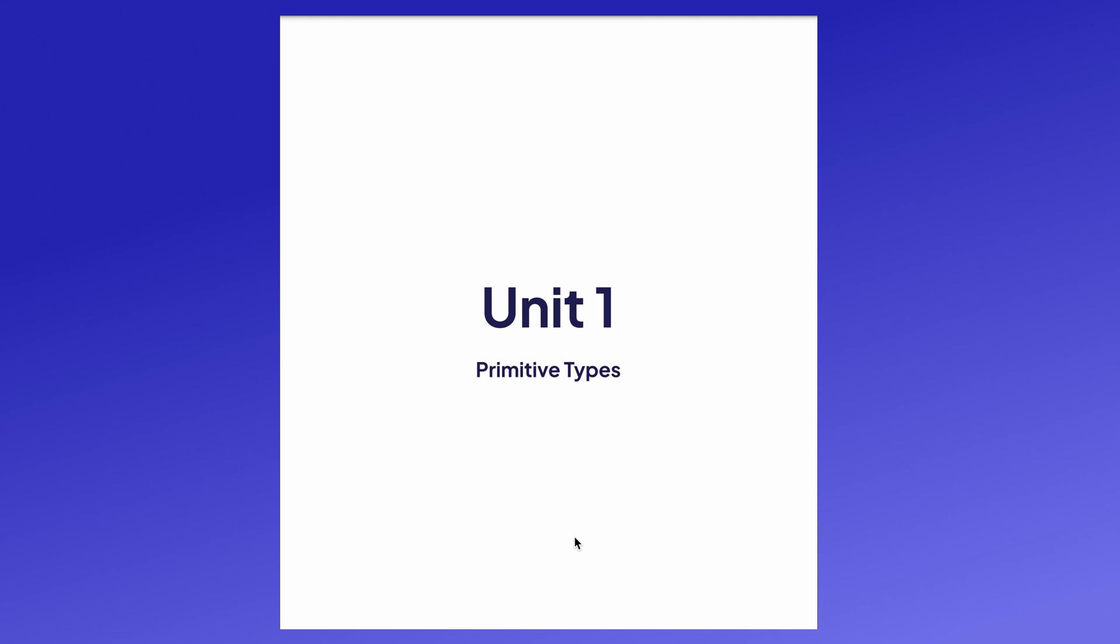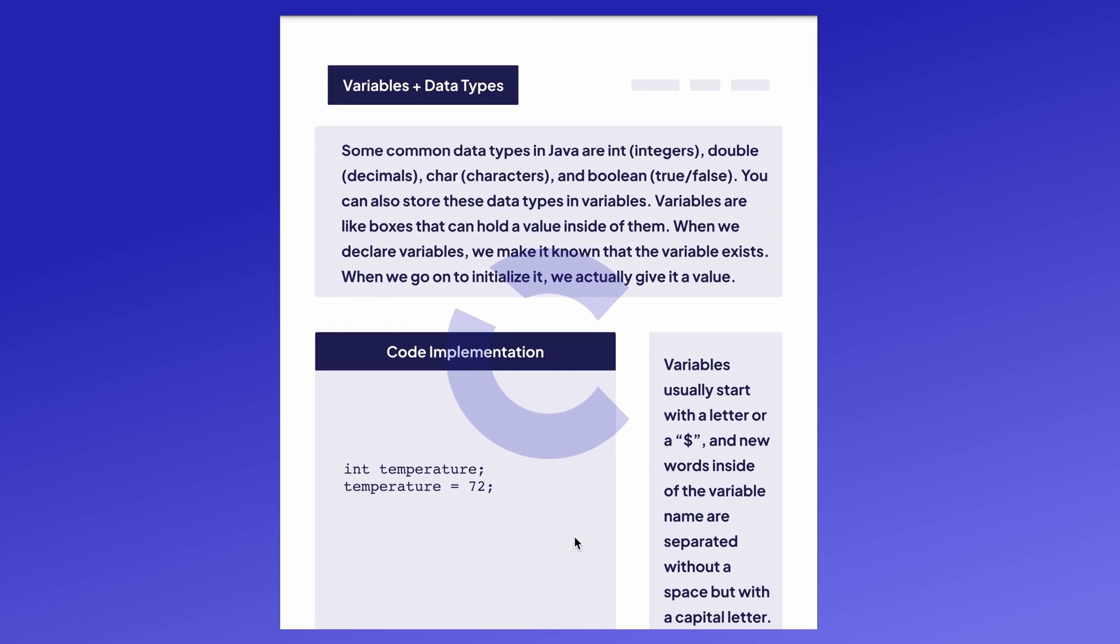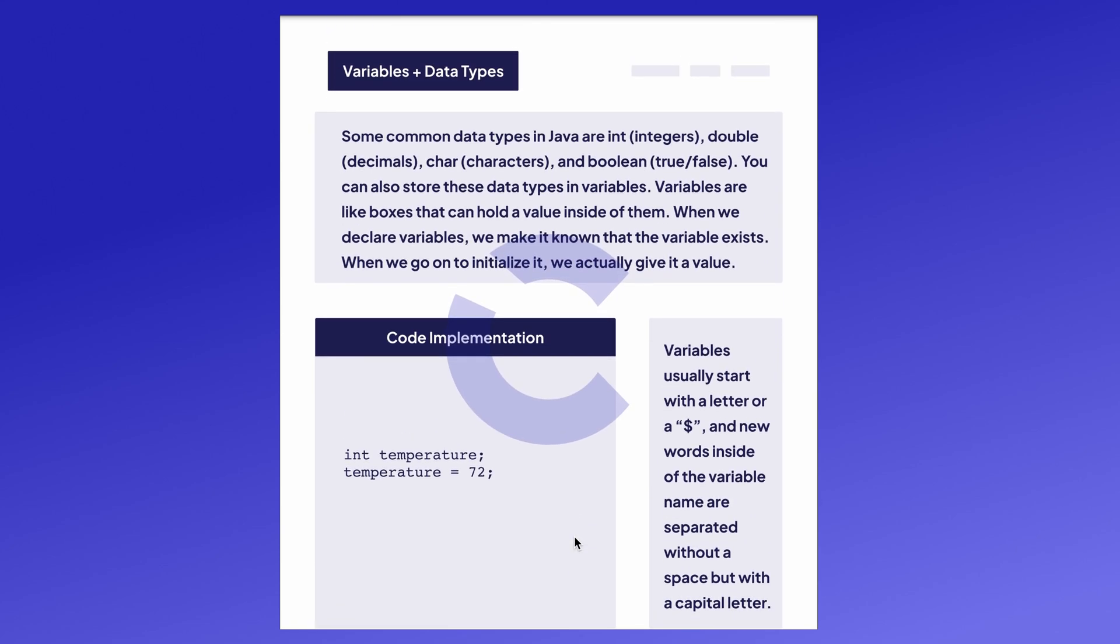Java uses something called variables to store information when you code. These include integers, decimals, characters, and booleans, and those data types are determined in the beginning, unlike other programming languages such as Python.